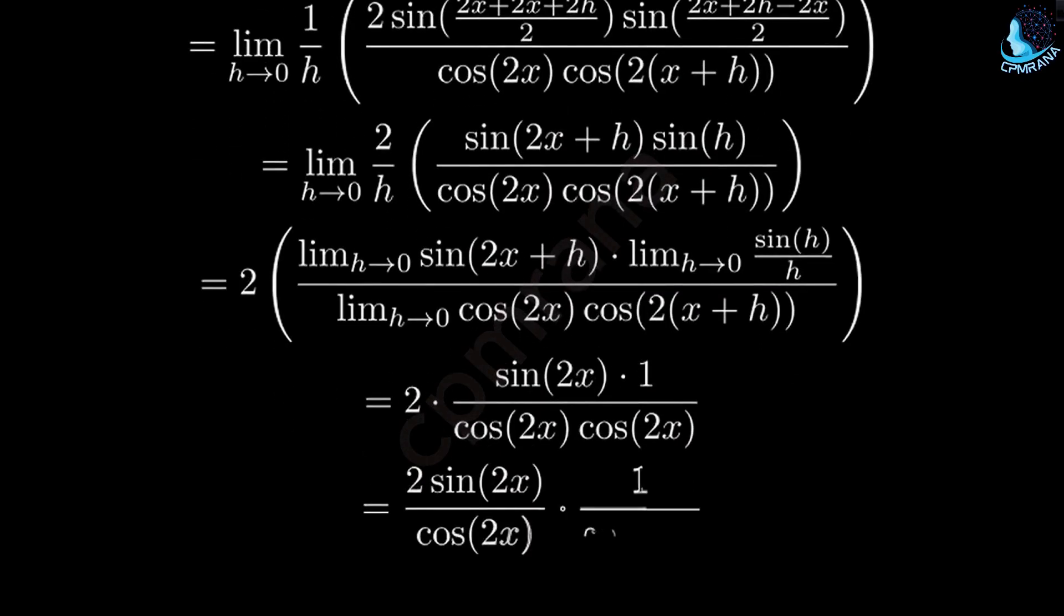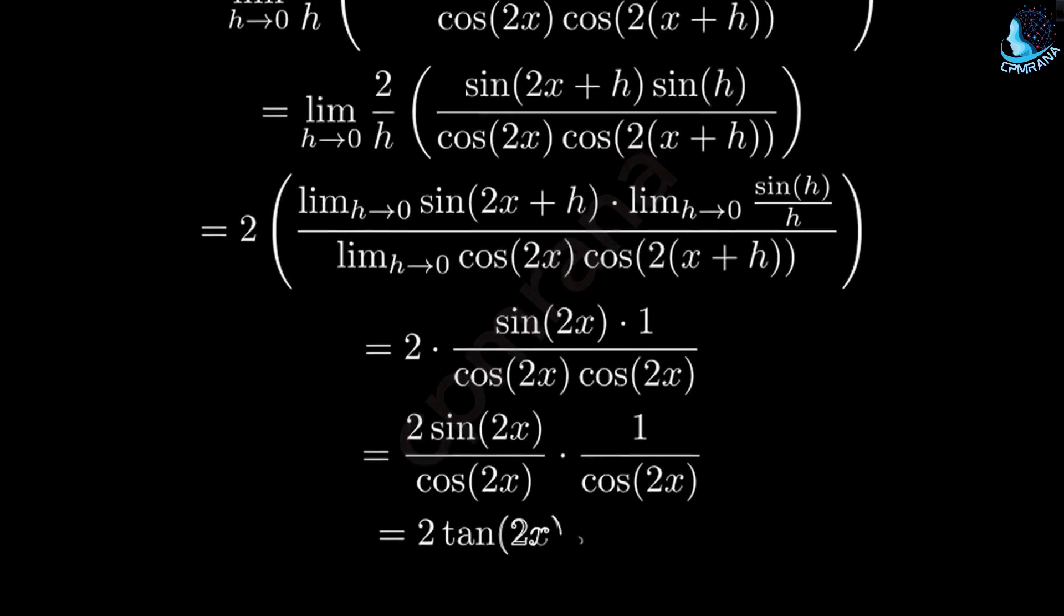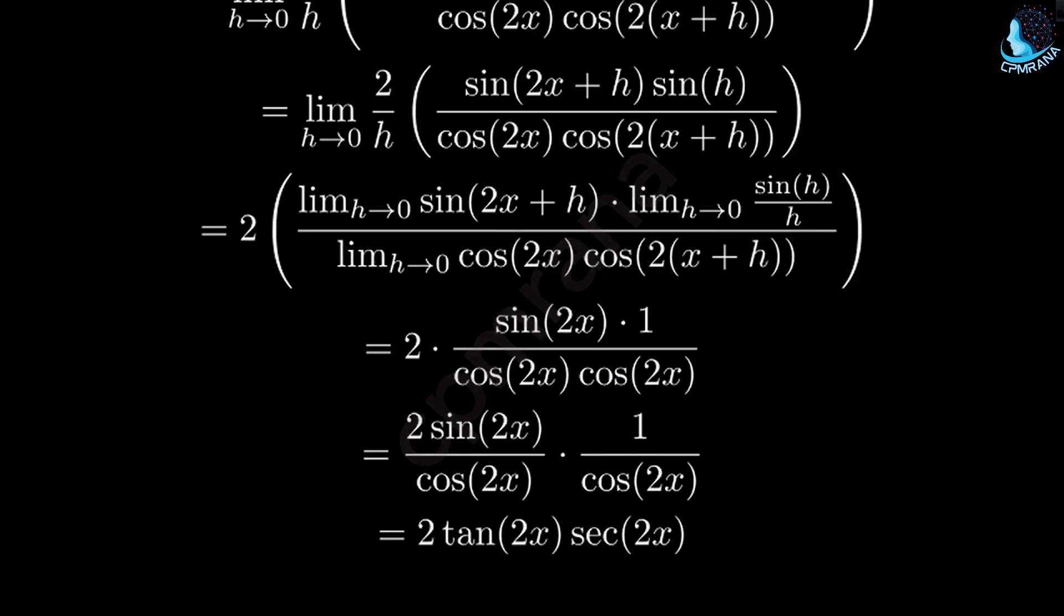Finally, we can write this as 2 sine of 2x over cosine squared of 2x, which equals 2 tangent of 2x times secant of 2x. Therefore,